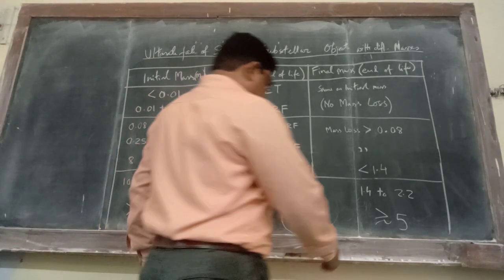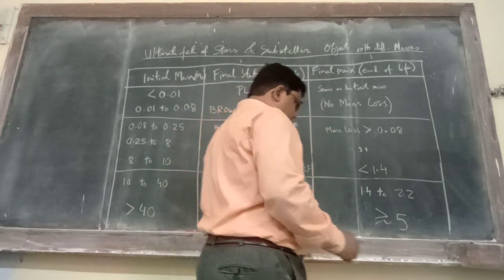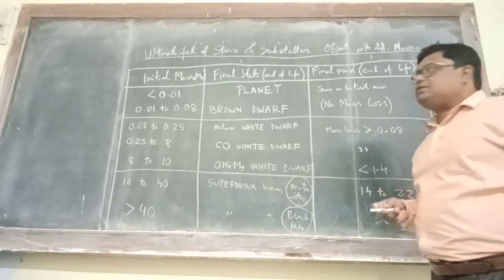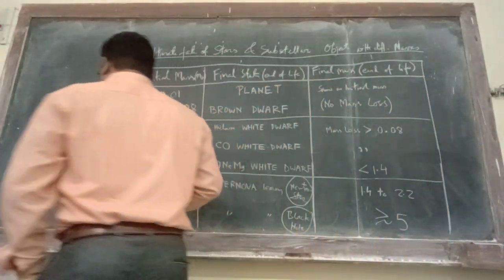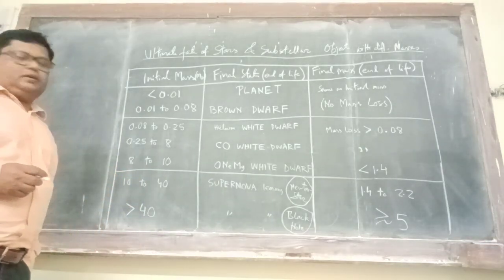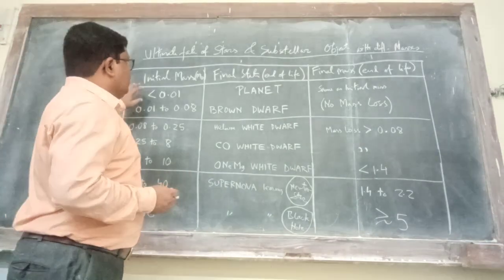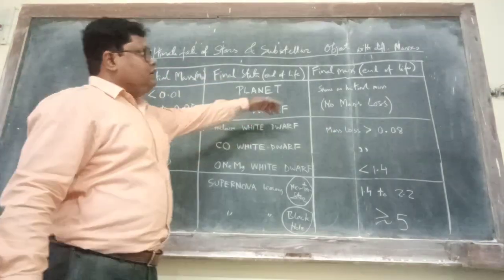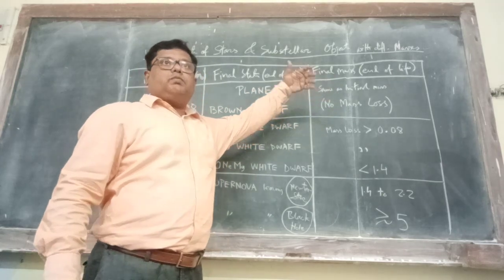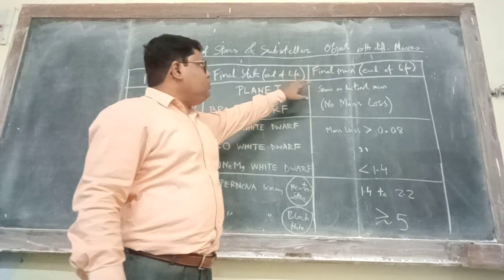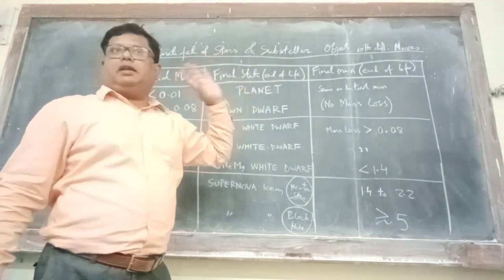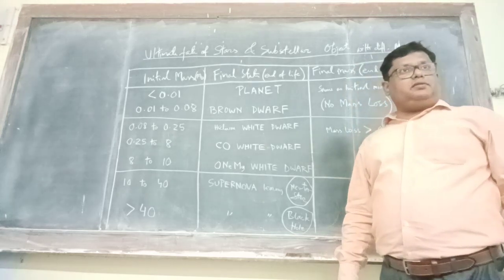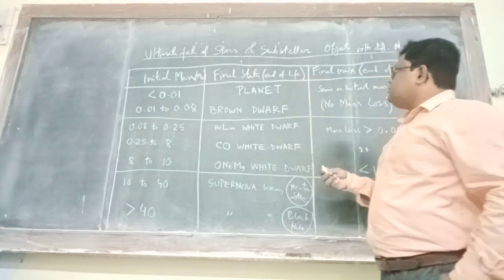After discussing the pre-main sequence and post-main sequence, let me talk about the ultimate fate of stars and various sub-stellar objects with different masses. The list goes like this: the initial mass, the final state, and whether there is mass loss or not in the process. Let me just revise this concept.